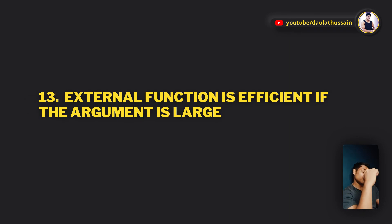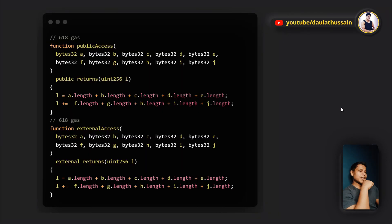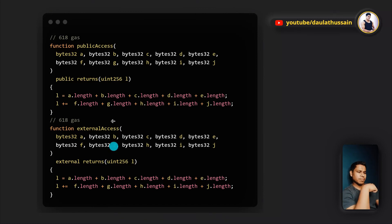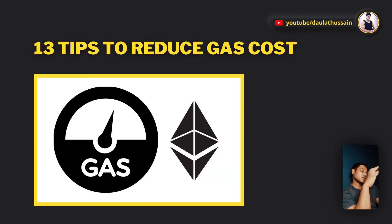Point number twelve/thirteen: external functions are very effective when dealing with large data. Using 320 bytes of data, both a public function and an external function required 618 gas. When you have large chunks of data, it's better to use external functions rather than calling data from within the same contract, as that costs higher gas. Making functions public and accessing data from public sources is more efficient.